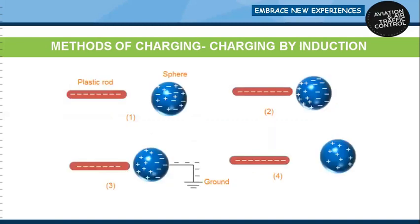Charging by induction: the process of charging an uncharged object by bringing another charged object near to it but not touching it is called charging by induction. Consider an uncharged metal sphere and a negatively charged plastic rod as shown in figure 1. If we bring the negatively charged plastic rod near to the uncharged sphere as shown in figure 2, charge separation starts occurring. The positive charges in the sphere get attracted towards the plastic rod and move to the end of the sphere closer to the plastic rod. Similarly, negative charges get repelled from the plastic rod and move to the other end of the sphere further away from the plastic rod.